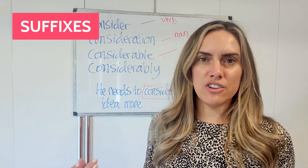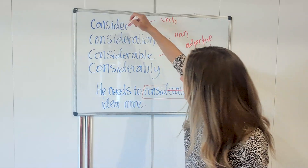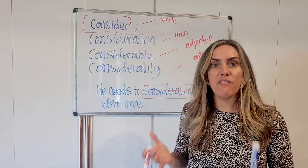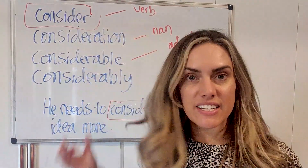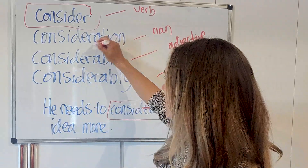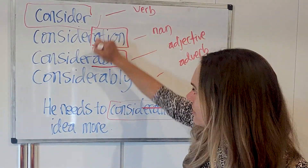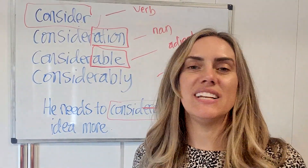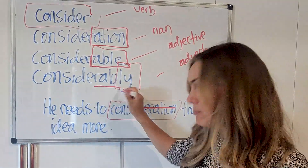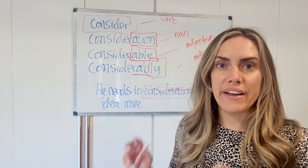I'm mentioning the term 'suffixes' not because you need to memorize it, but because if you wanted to Google it, you can look up some more common suffixes. So for 'consider,' the base word has no clear suffix. 'Consideration' ends in -ation, which is a very common suffix ending for nouns. 'Considerable' ends in -able, which is a very common suffix for adjectives. And 'considerably' adds -ly to the end to become an adverb — not always, but a lot of the time, -ly is for adverbs.